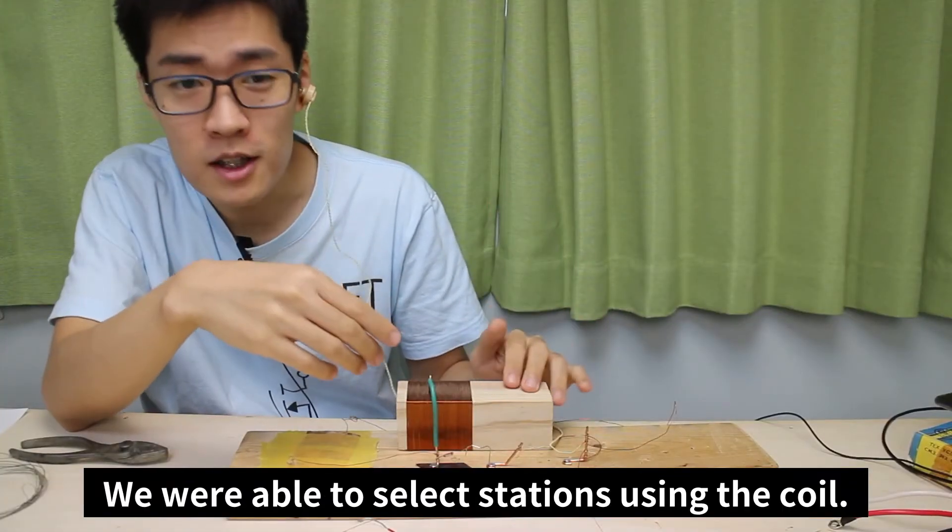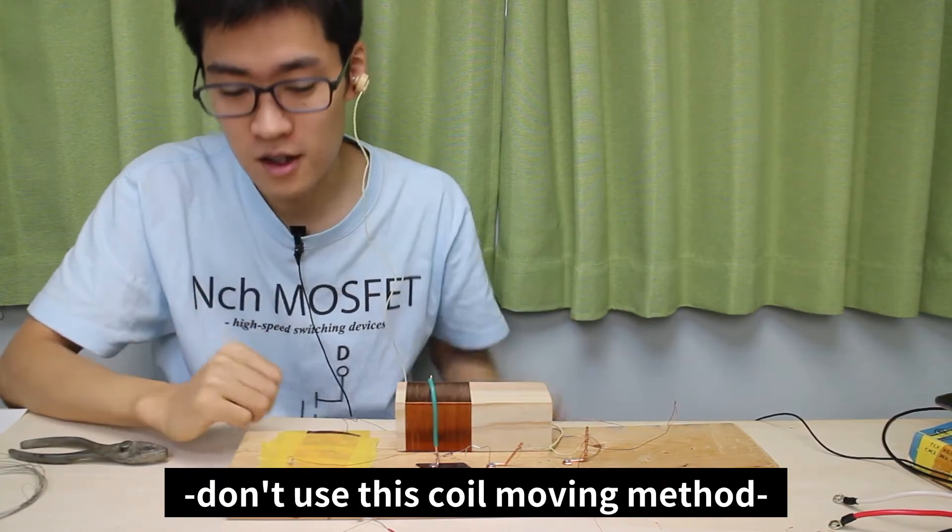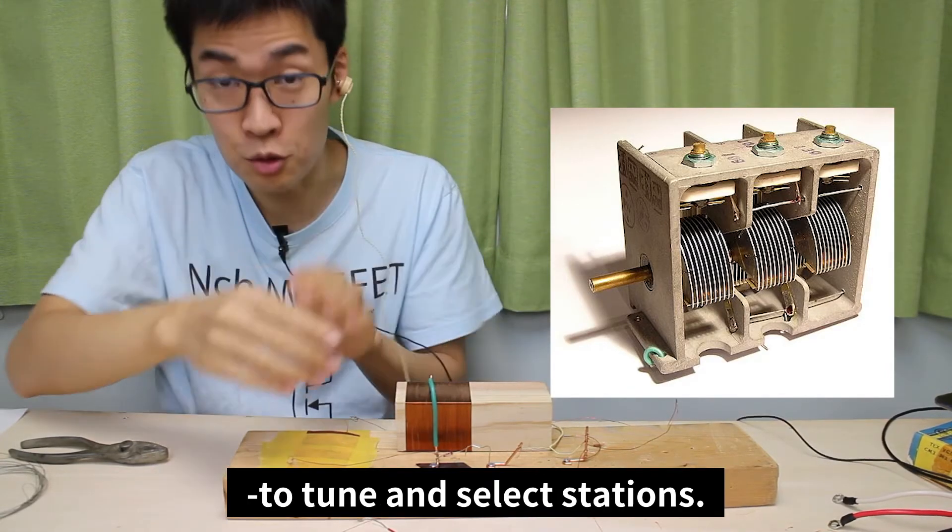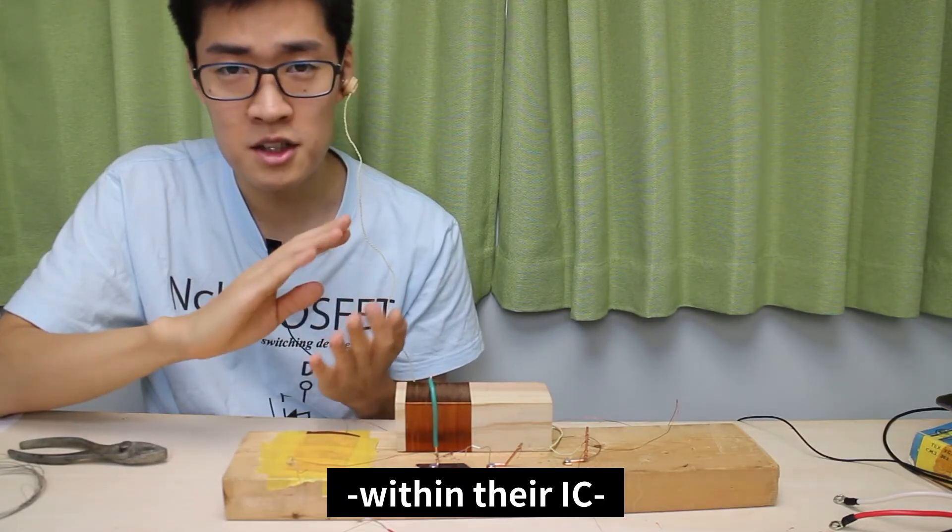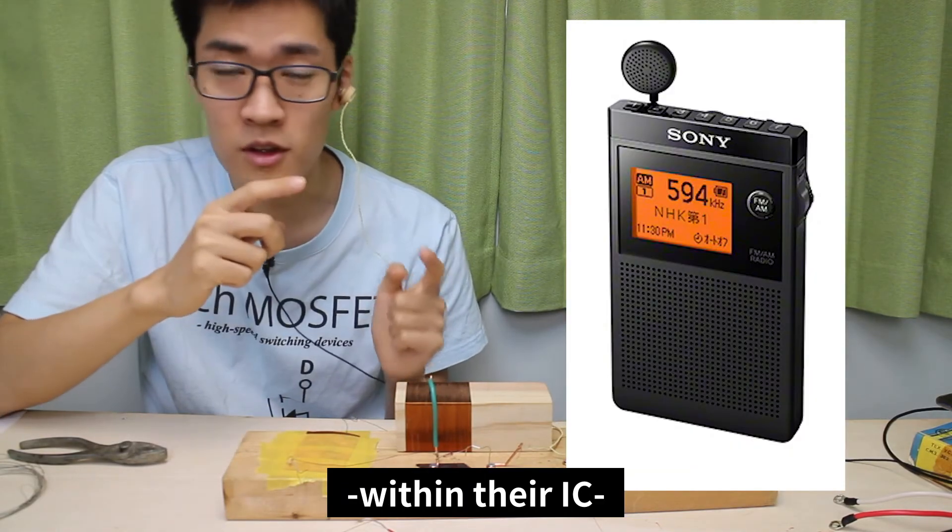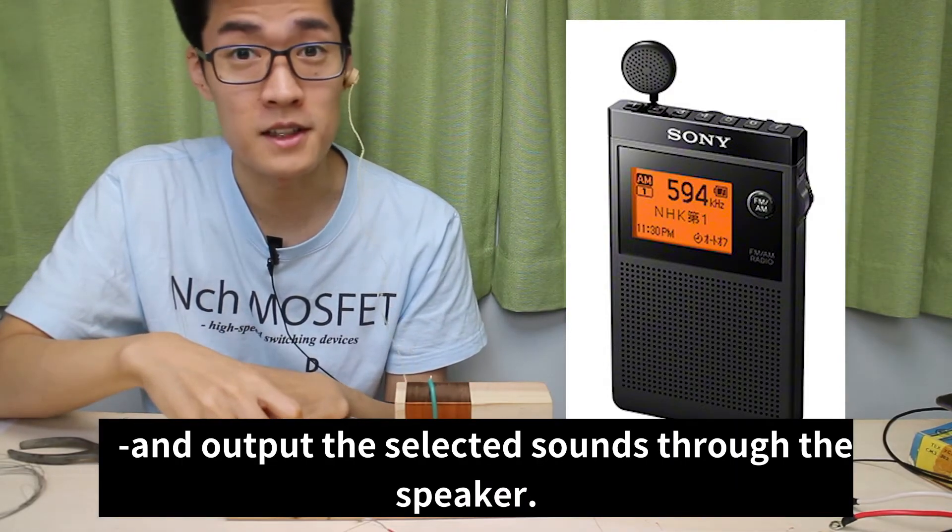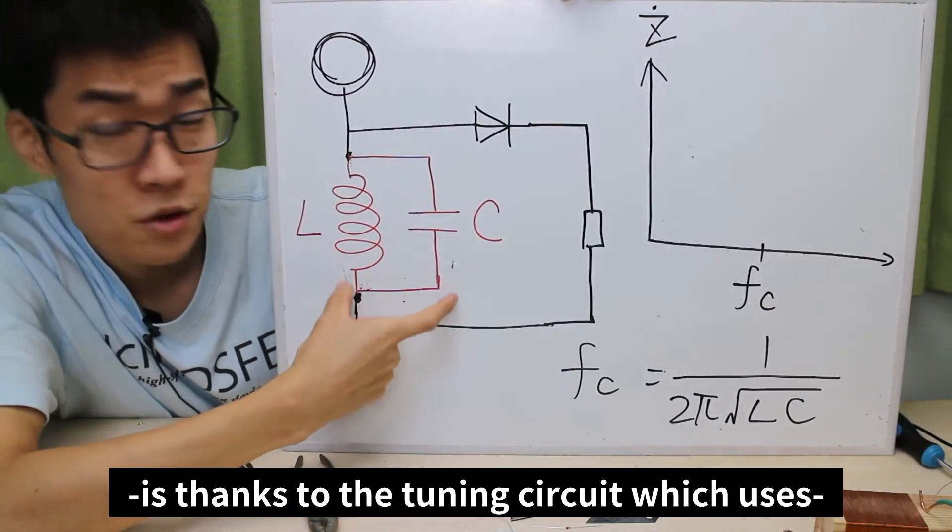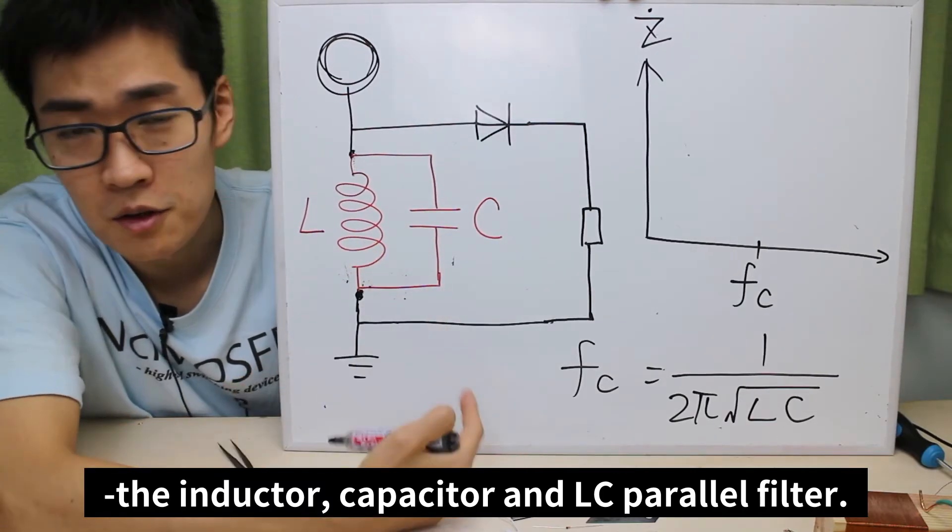We were able to select stations using the coil. Most radios don't use this coil moving method, but they change the area overlapping of the capacitors to tune and select stations. Digital radios select frequencies with their IC and output selected sounds through the speaker. This is why station selection is possible. It's thanks to the tuning circuit which uses the inductor, the capacitor, and the LC parallel filter.